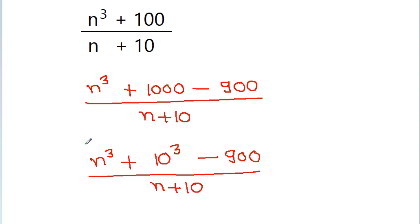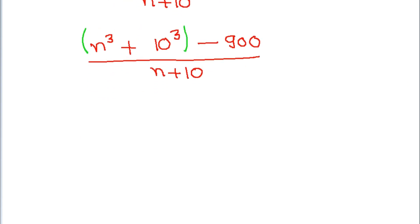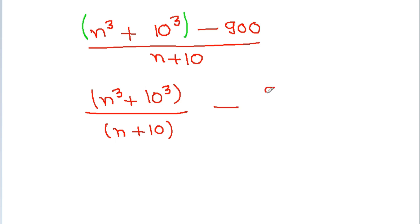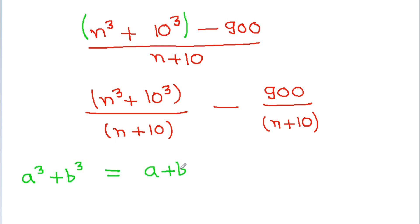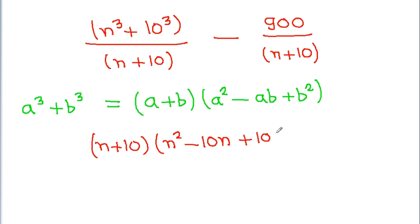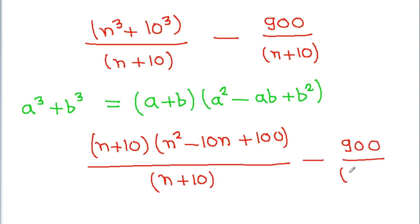And now, if we take n³ and 10³ together, we can write this as (n³ + 10³) / (n + 10) minus 900 / (n + 10). Using the identity a³ + b³ = (a + b)(a² - ab + b²), we get n³ + 10³ = (n + 10)(n² - 10n + 100), divided by (n + 10), minus 900 / (n + 10).